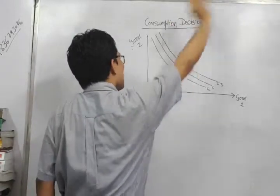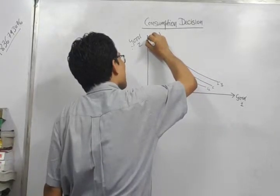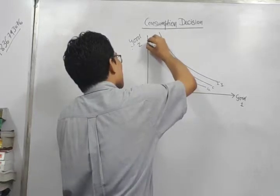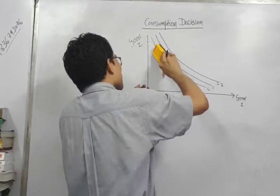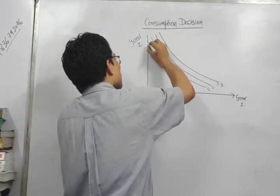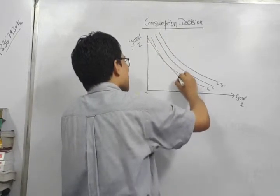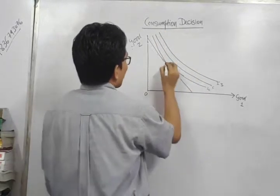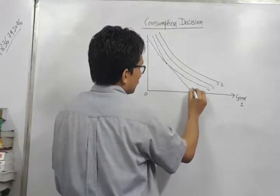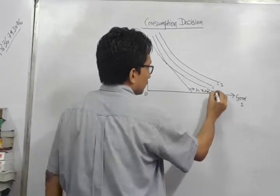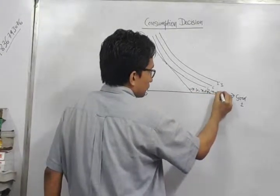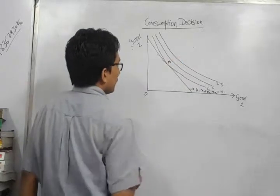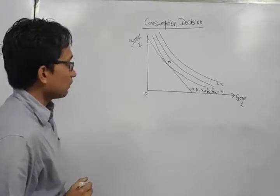Now we draw a given budget line. The budget line is nothing but P1 times X1 plus P2 times X2 equals income. Given this budget line, this is where the budget line is tangent to the indifference curve I1 at point A. At this point of equilibrium, we have the following conditions: given the indifference curve representing constant utility, and the budget line showing the situation where income is constant, at this point of tangency the slopes are equalized.